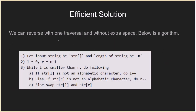This is the efficient solution that reverses in one traversal and without using extra space. Let the input string be STR and the length of the string be n. We have two iterator variables: L (left) starting at index 0, and R (right) starting at index n minus 1 — so L points to the first index and R points to the last index. We run a while loop with the condition: while L is smaller than R.